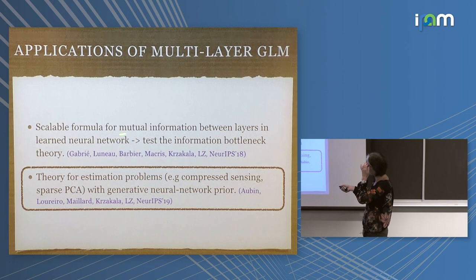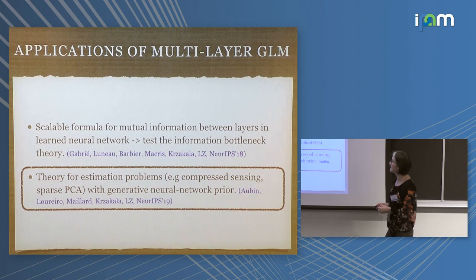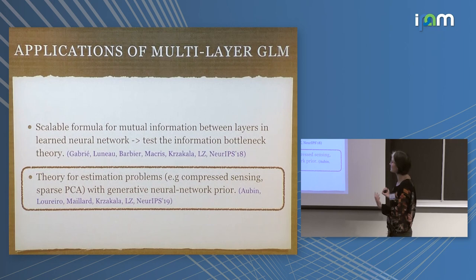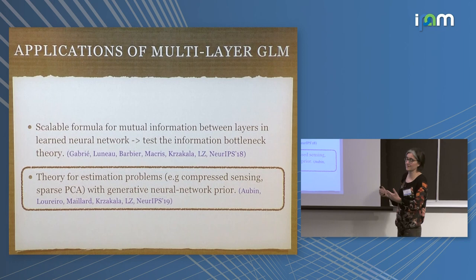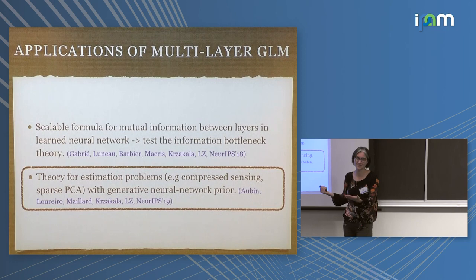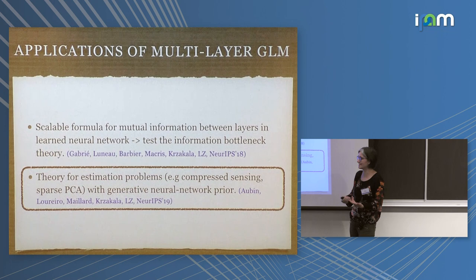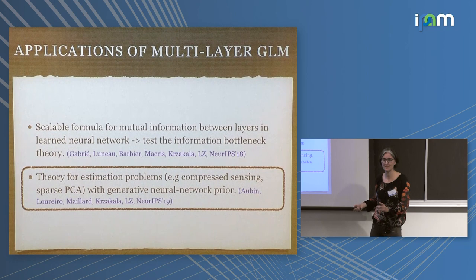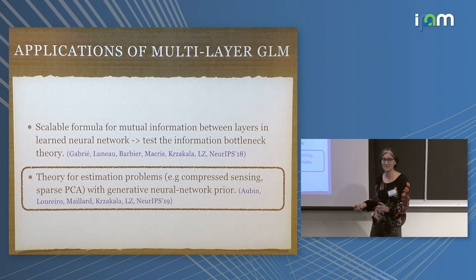Two applications: First, for those following the information bottleneck theory — which hypothesizes that understanding deep learning requires computing mutual information between layers — the bottleneck in testing or correcting that theory is that computing mutual information is computationally expensive. With our formula, we can actually compute mutual information between different layers, with a slight modification to how learning is done. We presented this at NeurIPS last year. So if you're interested in information bottleneck and mutual information, see that paper.